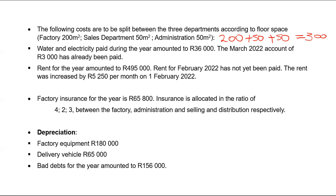Water and electricity paid during the year amounted to $36,000. The March 2022 account of $3,000 has already been paid — but March is outside the financial year, which ends 28 February 2022. That $3,000 is a prepaid expense and must be subtracted: $36,000 minus $3,000 = $33,000 belongs to the current financial year. That is the adjustment — now we allocate.